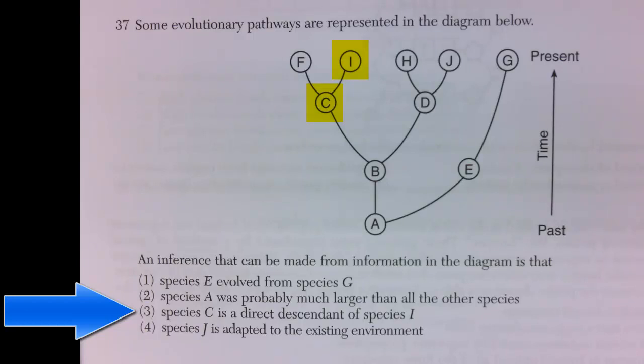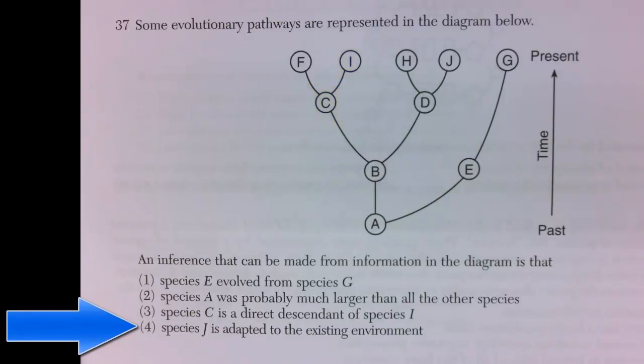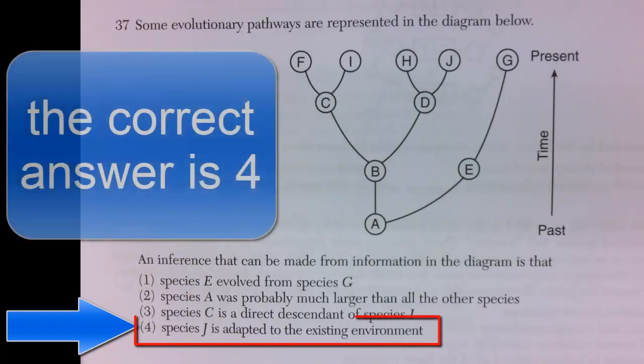The fourth answer is species J is adapted to the existing environment. Species J is in the present, so you can assume that if it is still alive in the present, it is adapted to withstand the current environmental conditions that exist in the present. So the best answer is four.